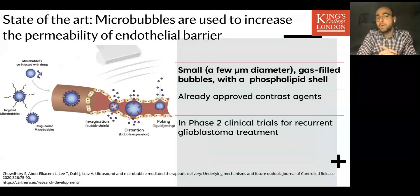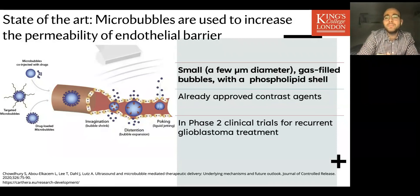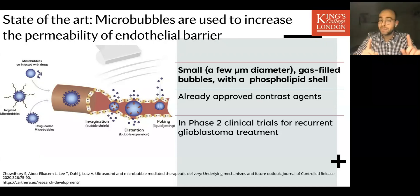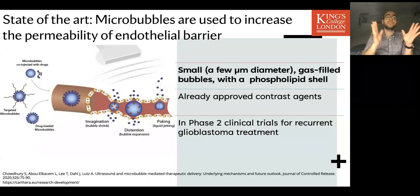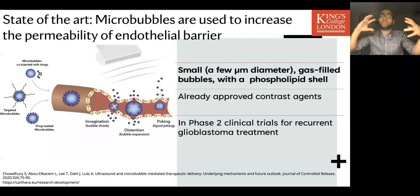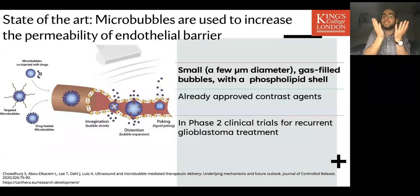What's the state of the art at the moment? As most of you know, it's microbubbles — they're small, a few micrometer diameter, gas-filled bubbles with a phospholipid shell, very similar to nanodroplets. They're already approved as contrast agents and they're in phase two clinical trials for recurrent glioblastoma. The application of focused ultrasound makes these microbubbles cavitate; they expand and contract and apply an energy deposition around them, making the endothelial barriers permeable and leaky for a short period of time, which we can exploit for drug targeting and delivery.